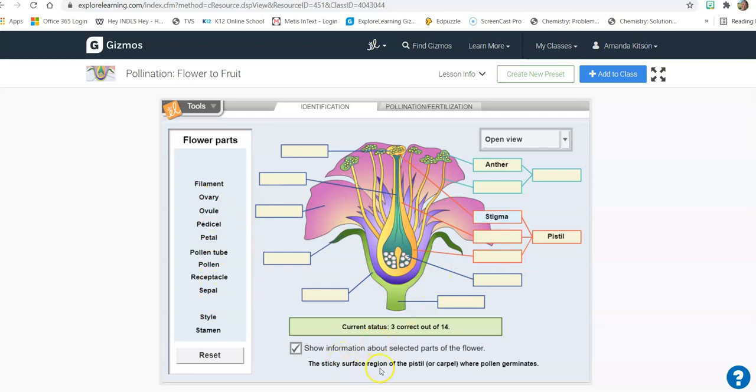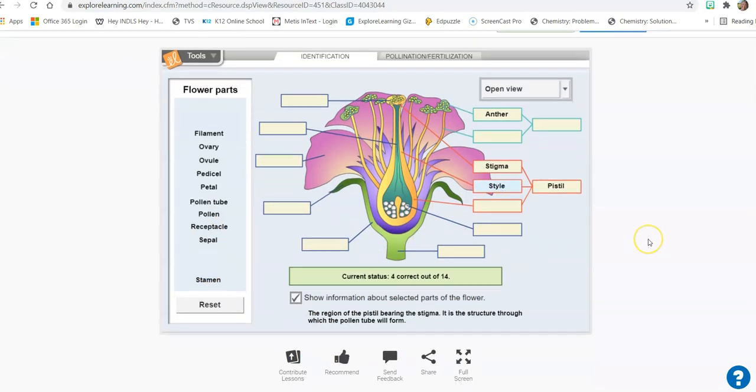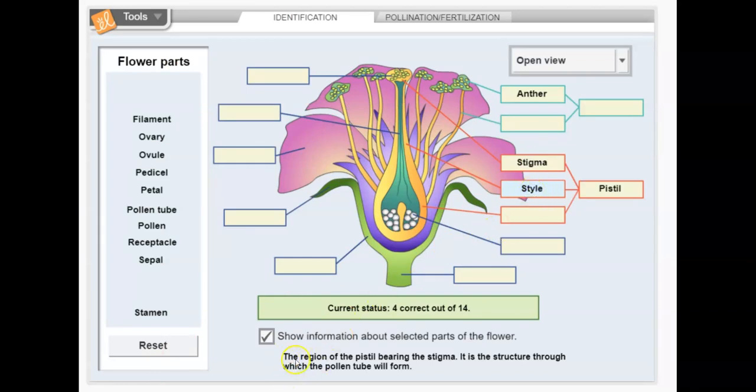And then what was it? If I click on pistil, it says stigma and then style. So I'll put that there. And for style, it says it's the region of the pistil bearing the stigma. It is the structure through which the pollen tube will form. And then the last one I think was if I click back on pistil was the ovary.